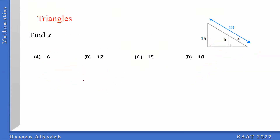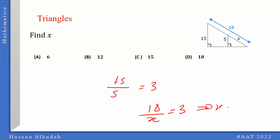So the idea is 15 over 5 is equal to 3, then 18 over 3 is equal to 6. So this is going to be 3, as you just said. So the idea is x is going to be 6. Yes, you're good.